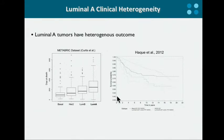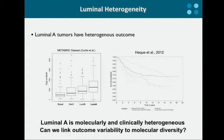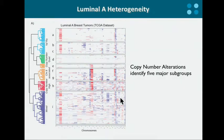Given this overall preliminary observation, we decided to focus specifically on luminal A breast cancer, as it looks like the most heterogeneous both molecularly and clinically. And we wanted to start exploring this diversity to address some fundamental questions — like, can we link the variability observed in clinical outcome with the underlying molecular diversity? We started to address this question by looking at copy number alteration.